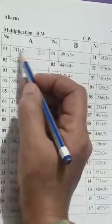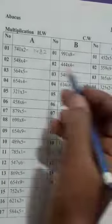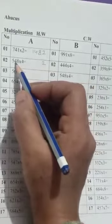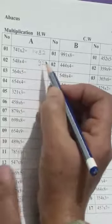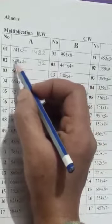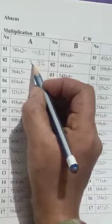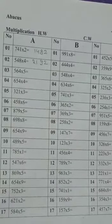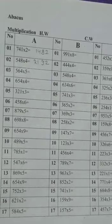Seven fours are 14 — write 4, carry 1. So 1482 is your answer. Eight fours are 32 — carry 3. Four fours are 16, plus 3 is 19 — write 9, carry 1. Five fours are 20, plus 1 is 21. Now you have to complete this full page with the same trick and practice it.